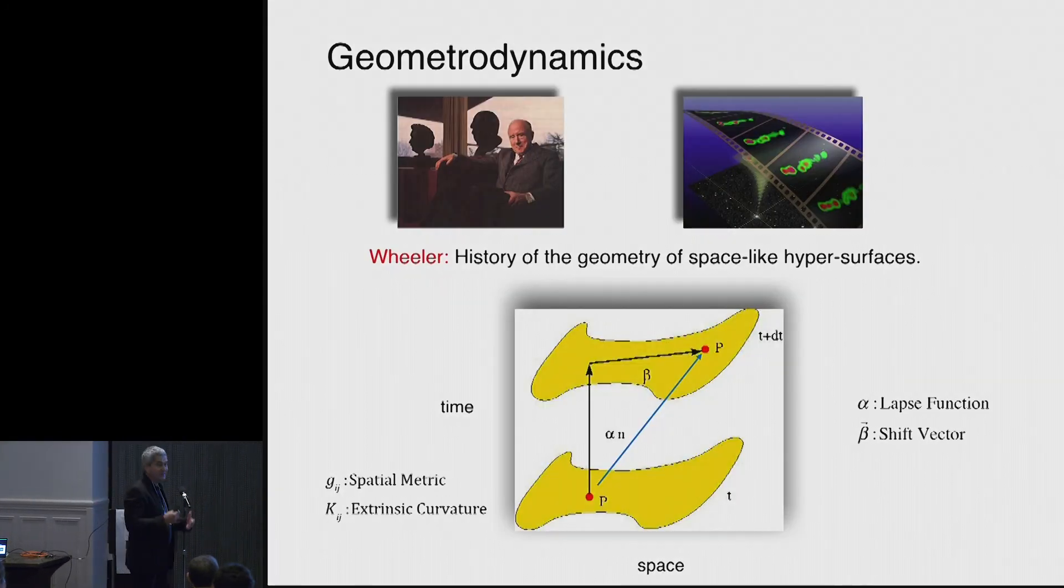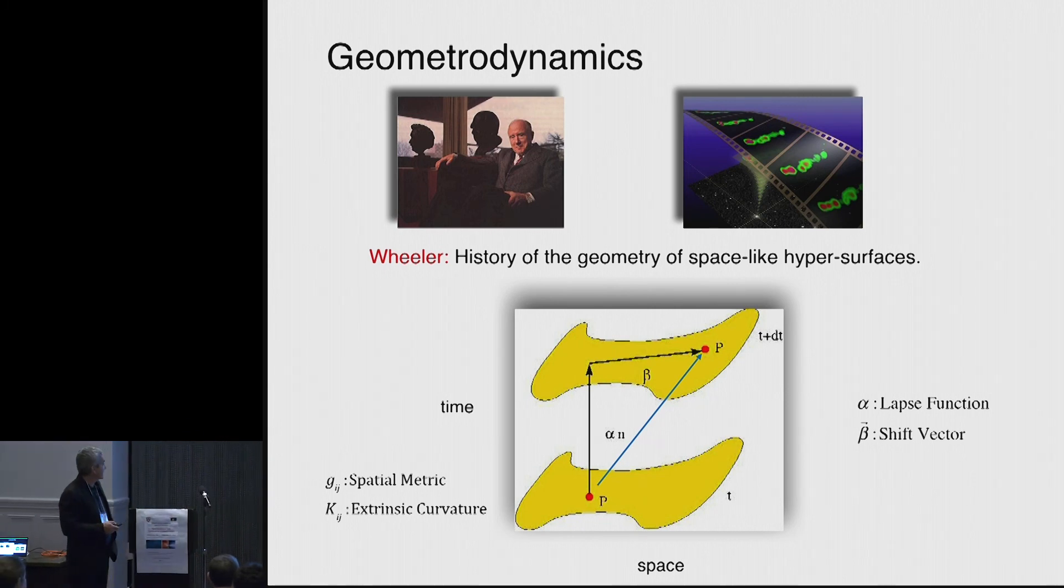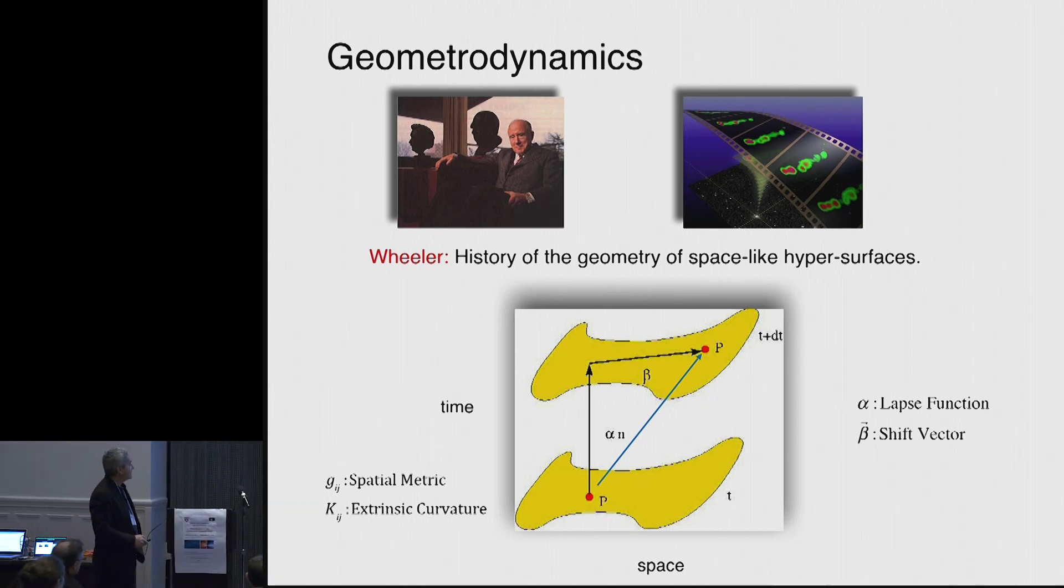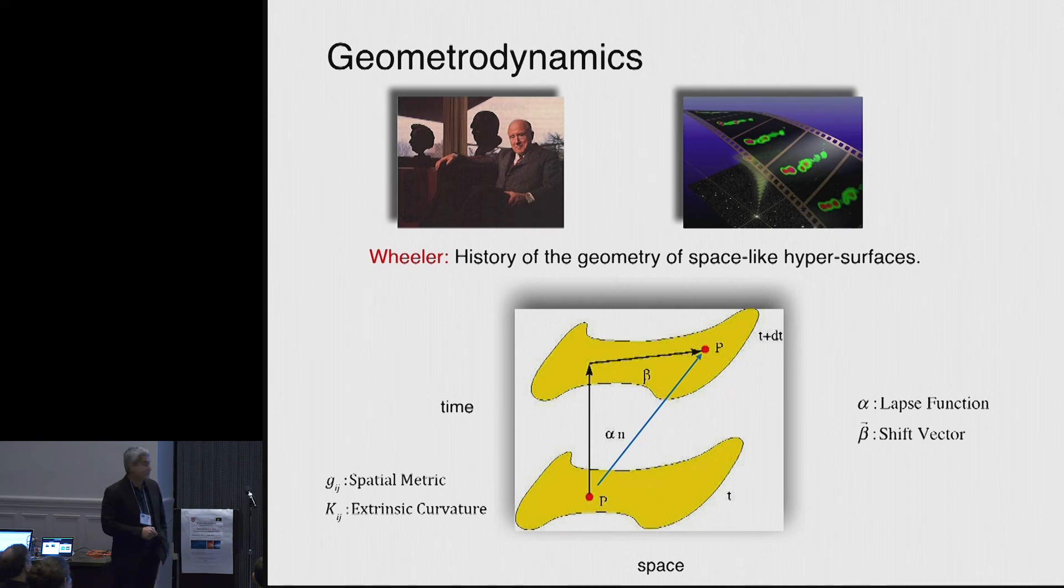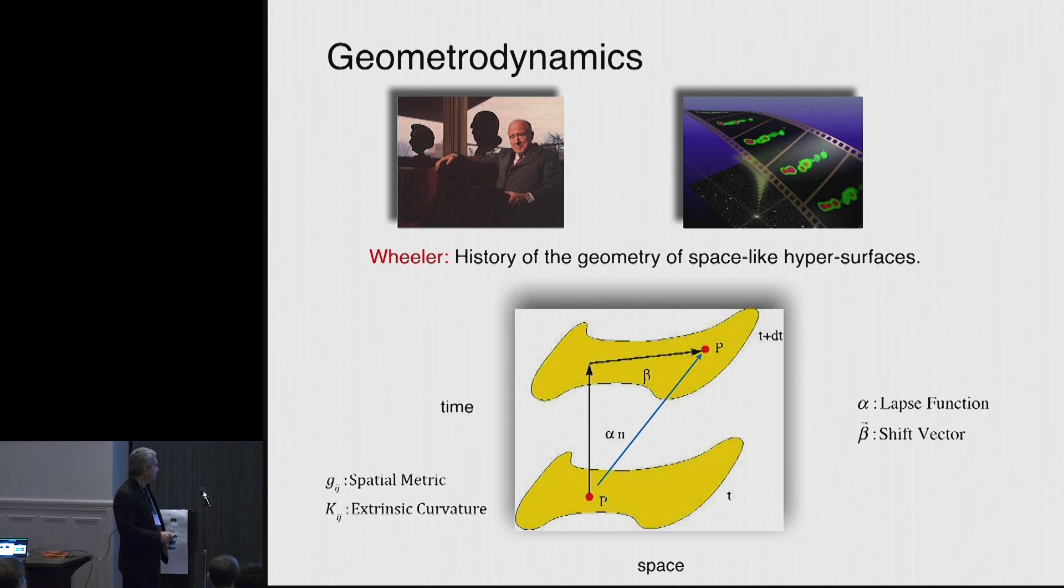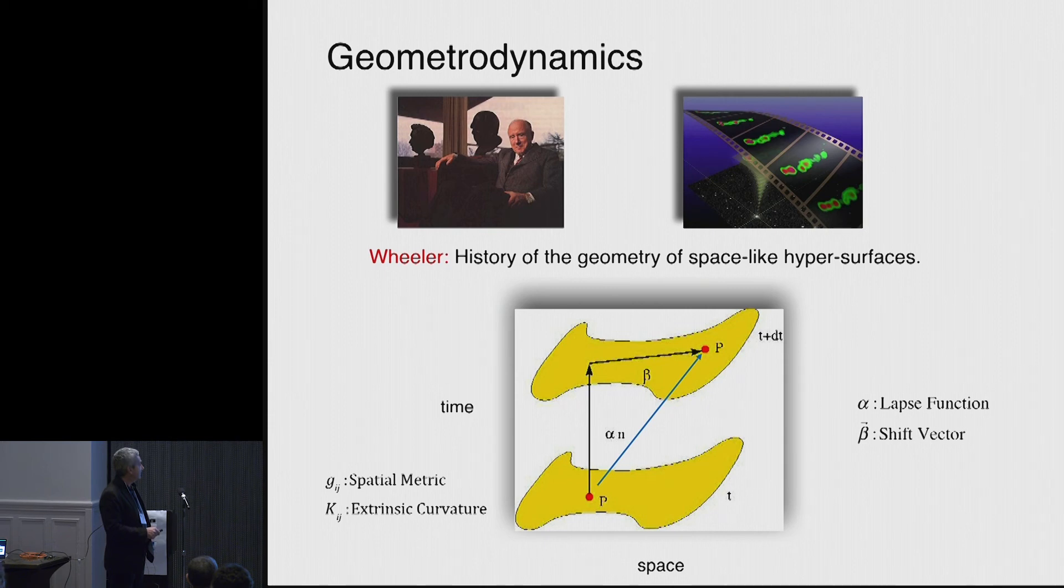So the type of approach that we use is as John Wheeler used to put it, geometrodynamics. What we have is we have a slice of constant time. And essentially what we do is we have equations that involve the spatial metric g_ij and extrinsic curvature K_ij. And also we have some conditions, and this is what I'm going to focus in this talk. We have conditions about the lapse function alpha.